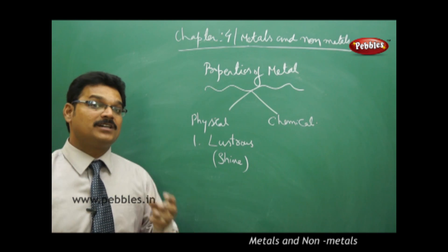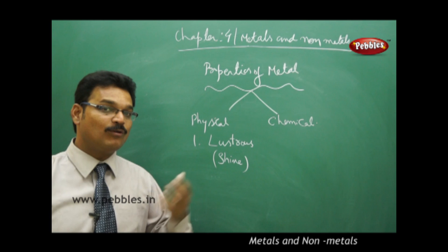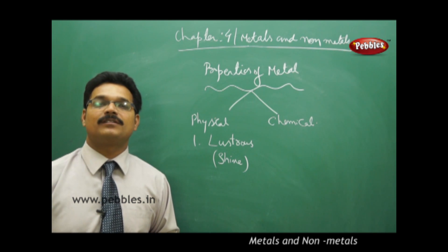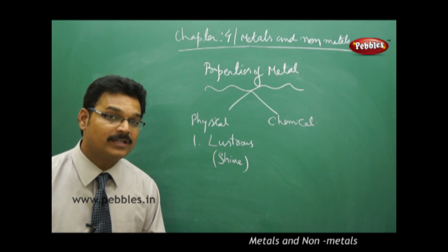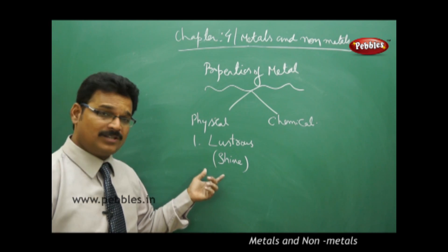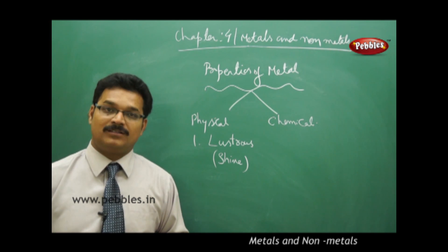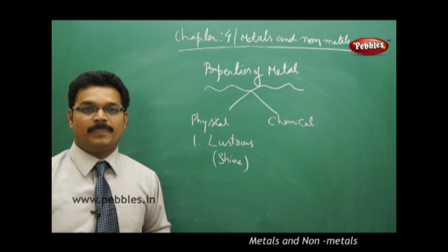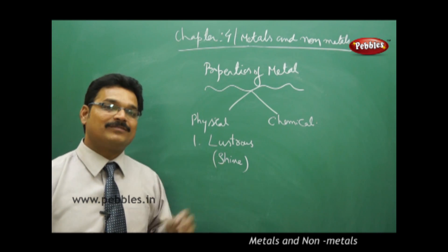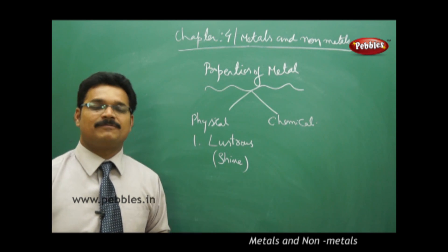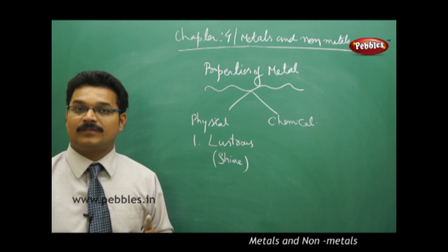What is the lustrous property? It means the materials which can shine are called lustrous materials. Generally metals shine. Take gold jewelry—does it shine? Yes, it shines. Take silver jewelry—does it shine? Yes. So lustrous is a common property to identify metals.